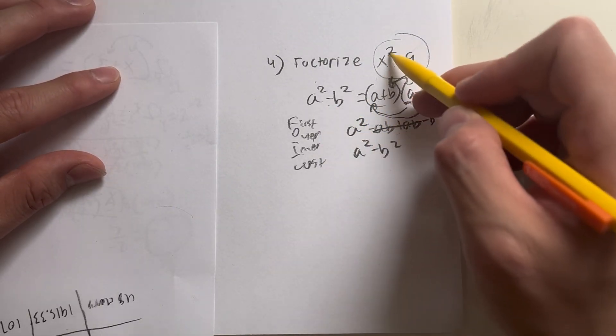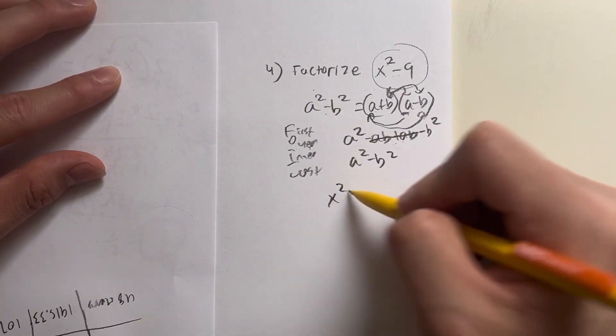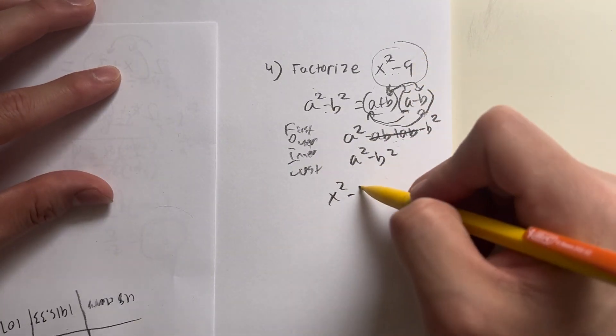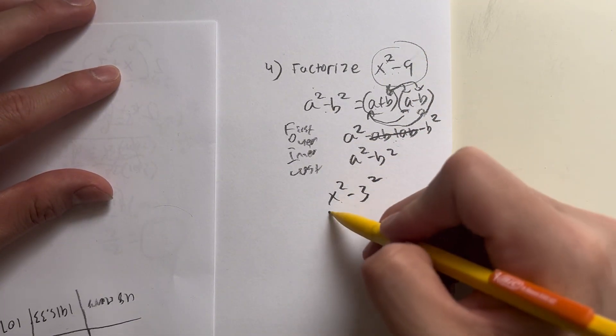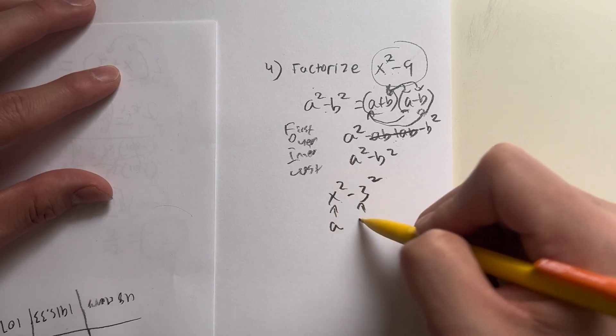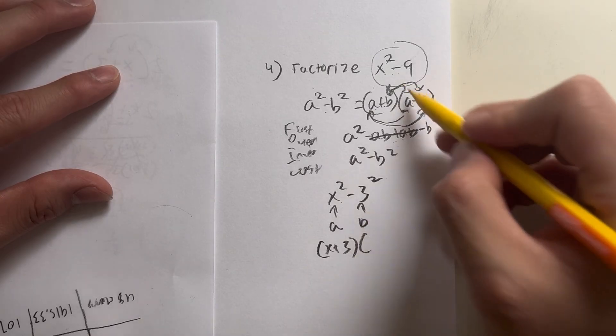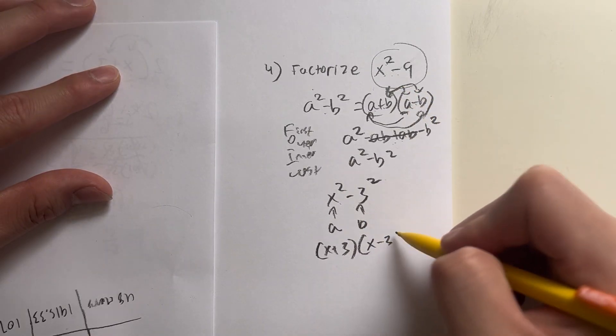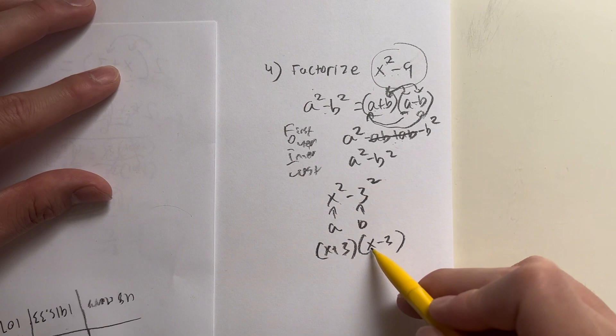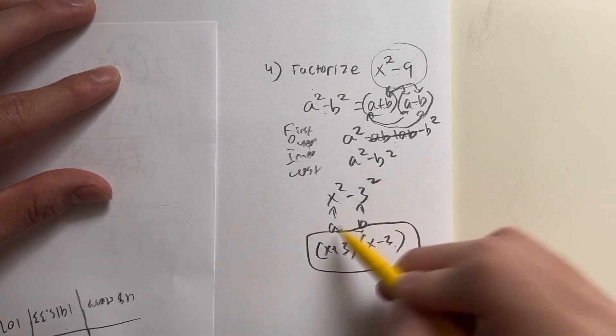Now, what squared do I see? I see x squared minus what squared? 9, as we know, is 3 squared. So as you can see, this is your a value, and this is going to be your b value. a plus b, which is x plus 3, times a minus b, which is x minus 3. a plus b, a minus b. And that right there is going to be your answer.